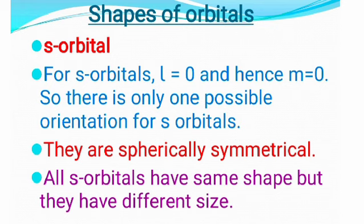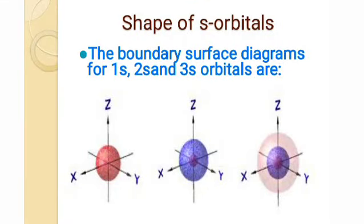Firstly, S-orbital. S-orbital has l-value equal to 0. The m-value, which is called orientation, is also equal to 0. There is only one possible orientation for S-orbital, where the m-value is equal to 0. S-orbital is spherically symmetrical in shape.